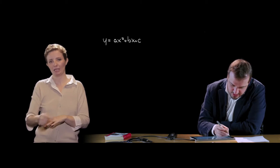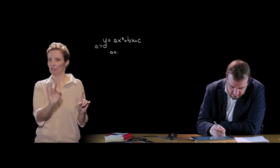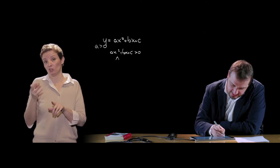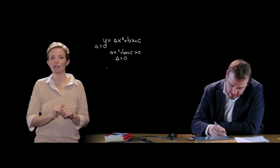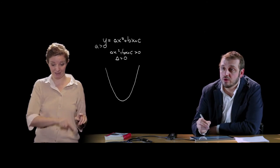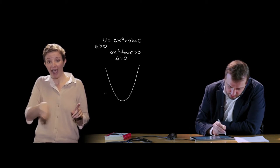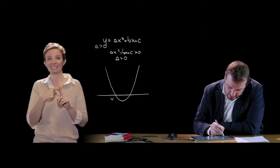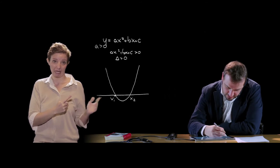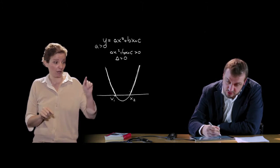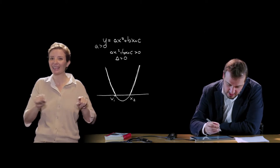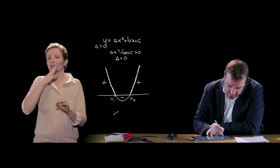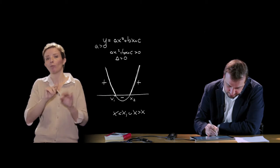Consideriamo sempre A > 0 e vediamo AX² + BX + C > 0. Primo caso, delta > 0: con A > 0, la parabola ha concavità rivolta verso l'alto. Le ordinate positive si trovano prima di X1 e dopo X2. Questa parte della parabola si trova al di sopra dell'asse delle X, quindi il trinomio è positivo per X < X1 oppure X > X2, e negativo nell'intervallo compreso tra X1 e X2.